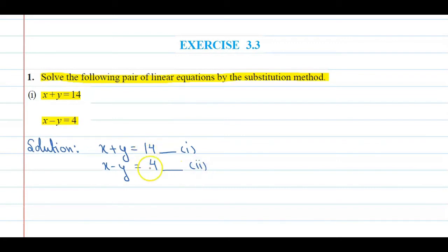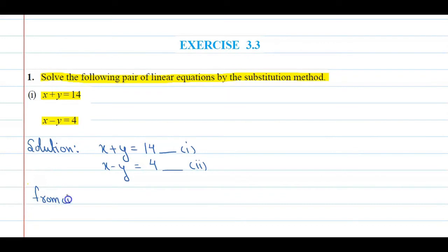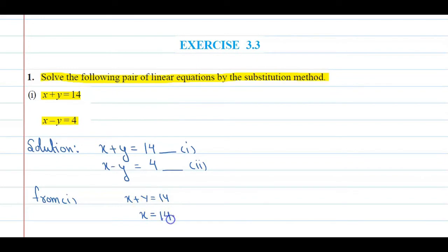अब देखें, आप इन दोनों में से कोई भी equation चूज़ कर सकते हैं. उससे आप एक variable की value निकालेंगे in terms of दूसरे variable. तो अगर मैं equation number 1 ले लूँ और x की value निकाल लूँ in terms of y — from equation 1, that is x plus y equal to 14 — x को एक तरफ अकेला छोड़ देंगे, so x is equal to 14 minus y. This is your value of x in terms of y.